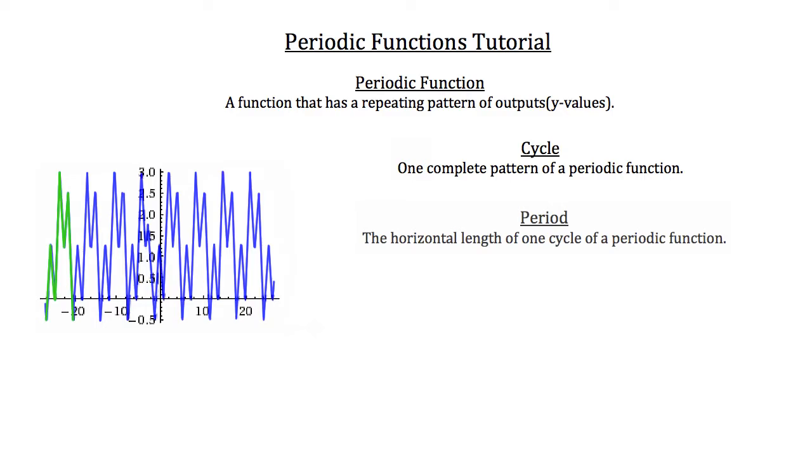Now the period of a periodic function is the horizontal length of one cycle of a periodic function. So that's the horizontal distance it takes to complete one cycle of that function.